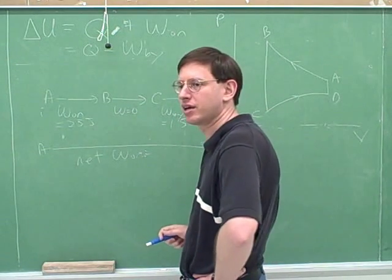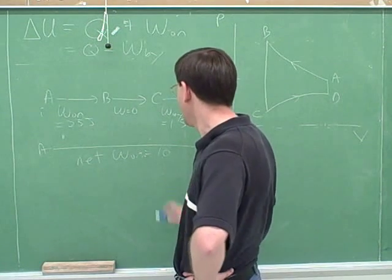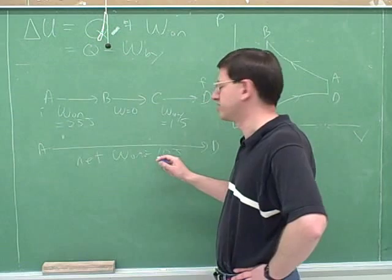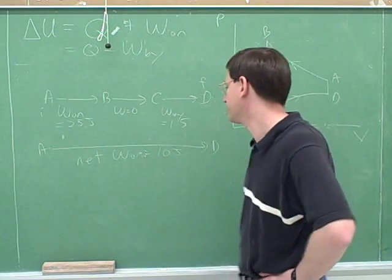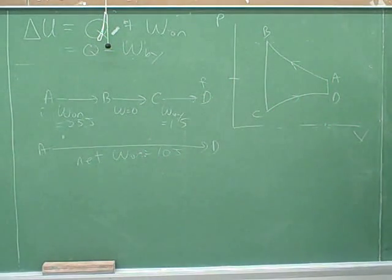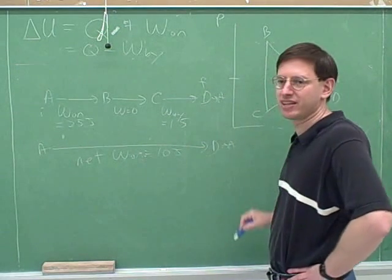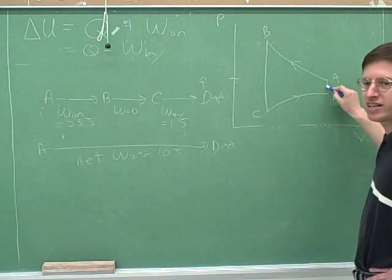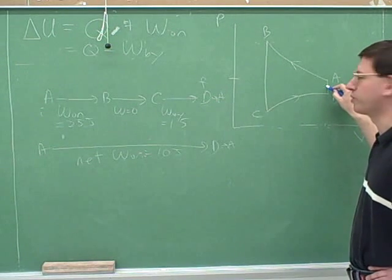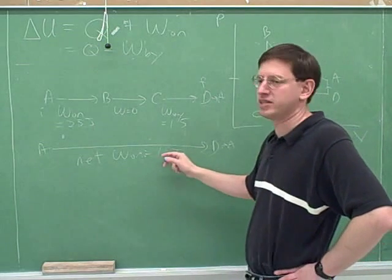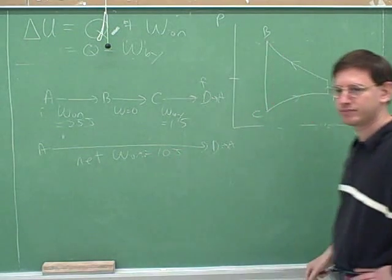And with these numbers, what is the work done on the gas? Ten joules. Yeah. If you wanted to, you could say the network done by the gas is a negative 10 joules, but it's much simpler just to focus on the work done on the gas. And it doesn't really matter whether we end at D or end at A. Because if we went this last segment, that wouldn't change anything because there is no work done along this last segment. So the network would still be 10 joules even if we finished up at A.